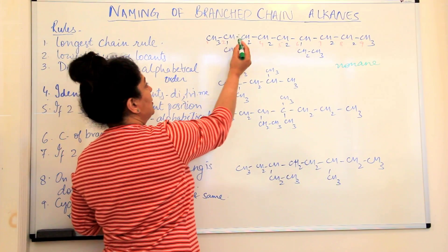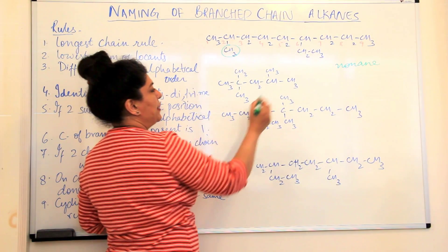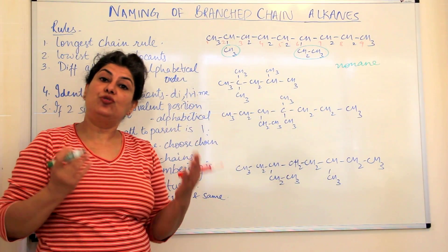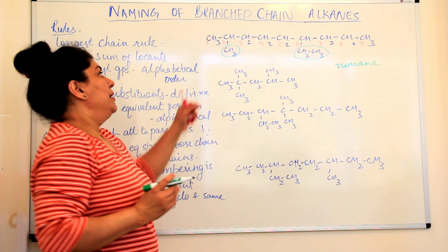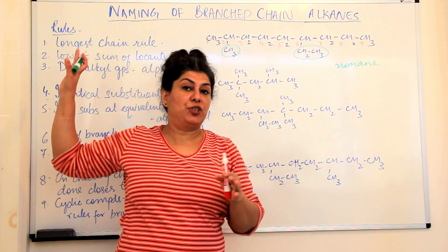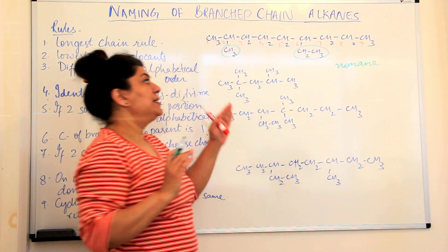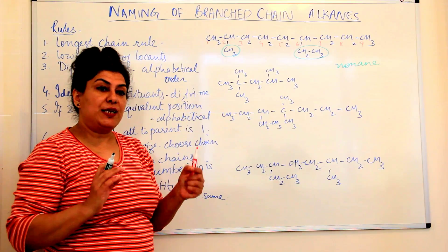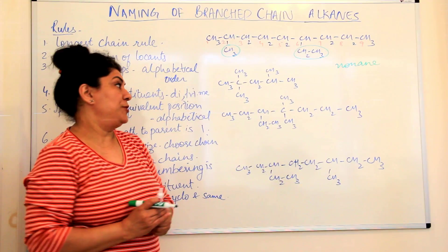Now we look for the branches. We find that on the second carbon there is a methyl group as a branch, and on the sixth carbon we have an ethyl group as a branch — there are two branches in this chain. The methyl and alkyl groups are named as substituents, that is the secondary prefix, and before writing the name of a substituent we have to write a locant, which is a number giving the position of that particular substituent.